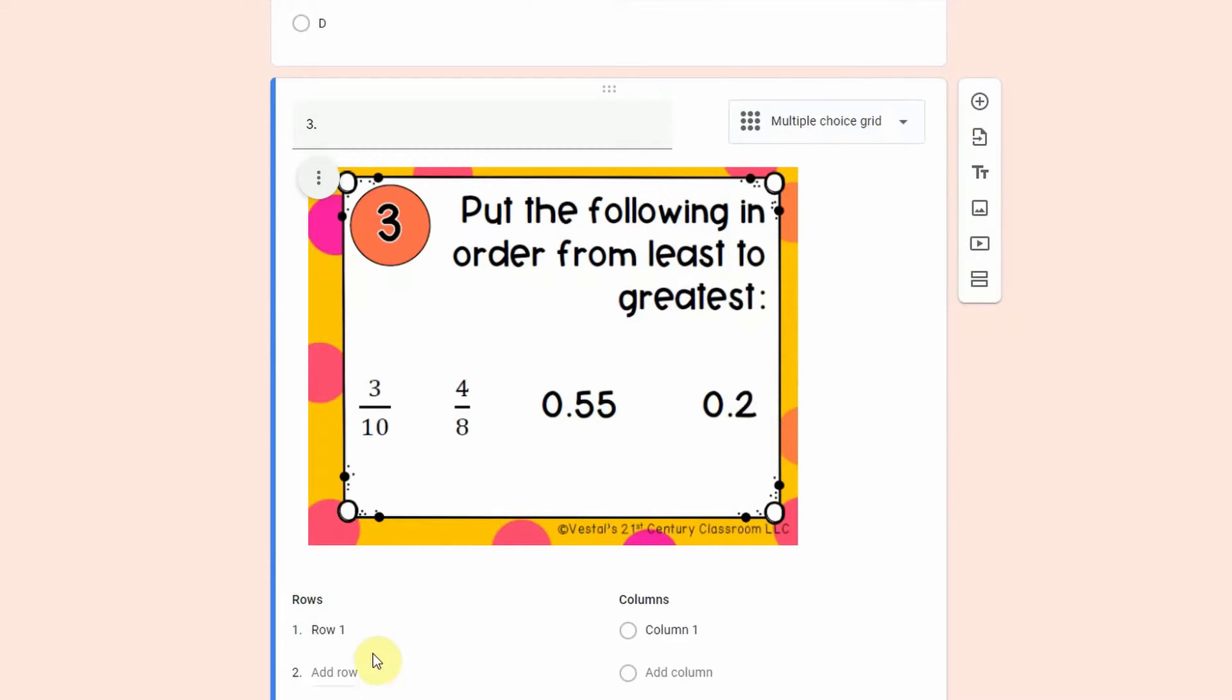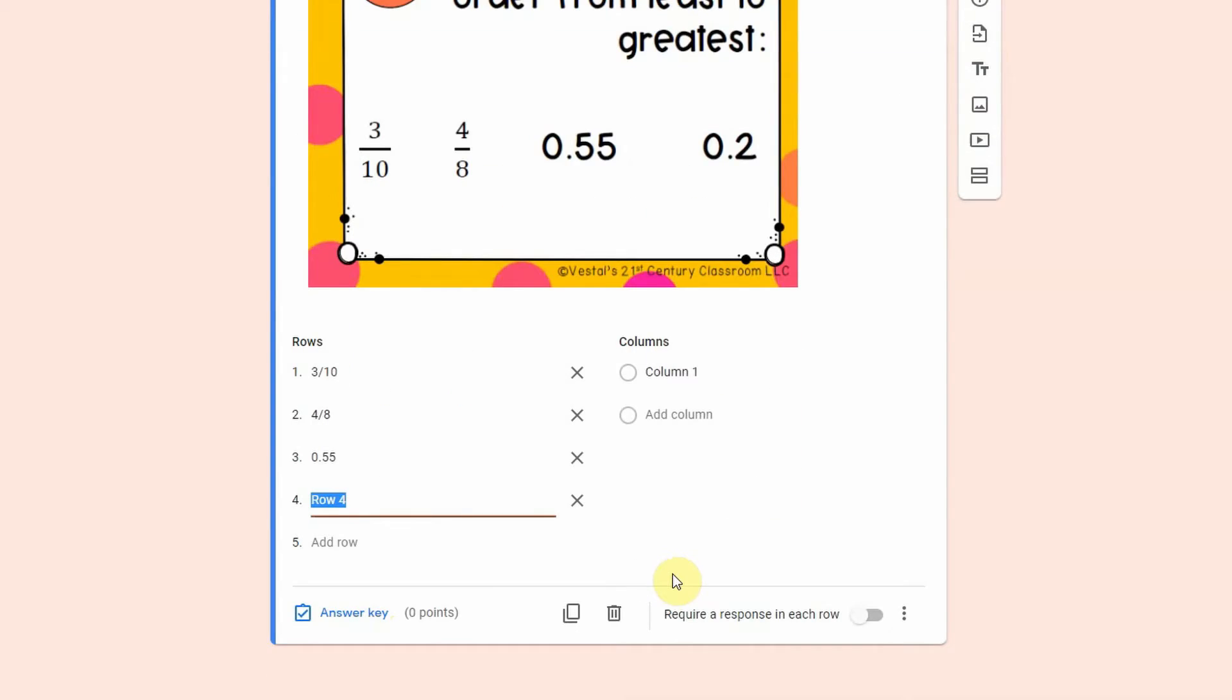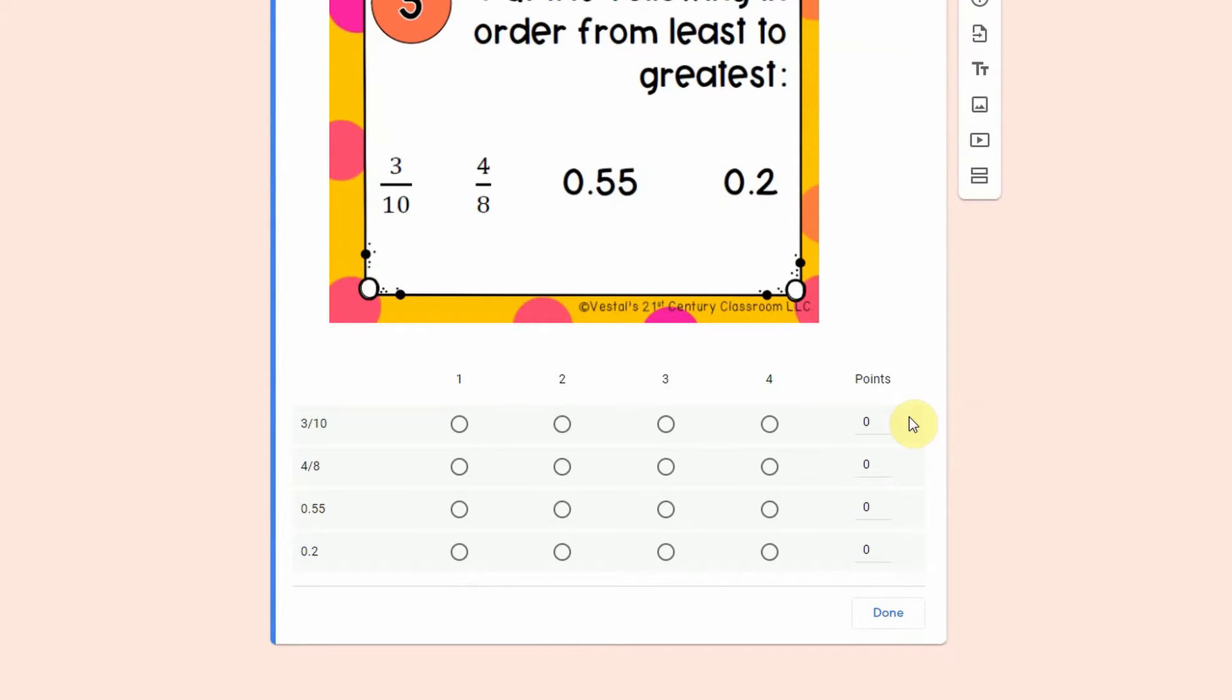So I could basically say each of the options here and then in the columns we would just say one two three four because they're putting them in order from least to greatest. We are going to require a response for each row.